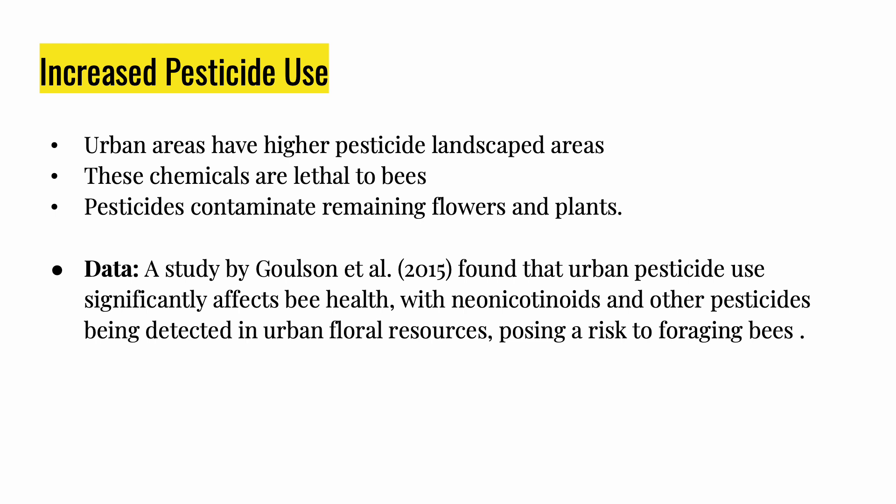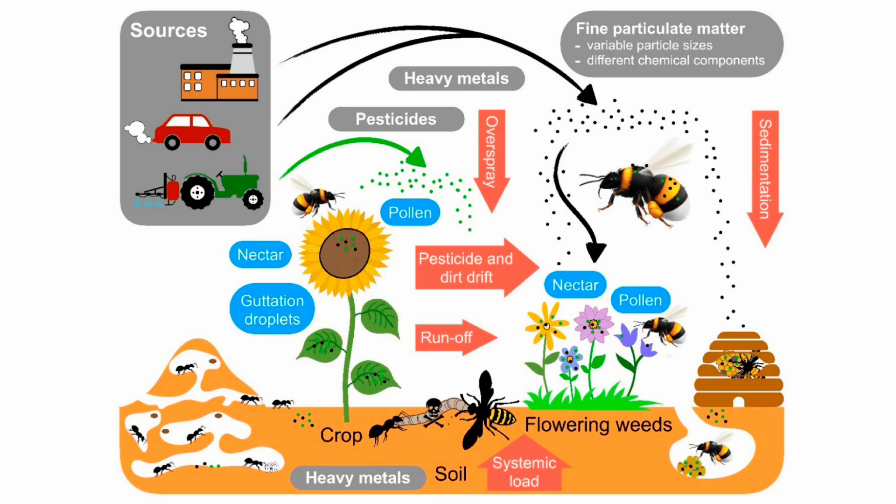Increased pesticide use. Urban areas often have higher pesticide usage in gardens, parks, and landscape areas. These chemicals can be harmful or even lethal to bees, further decreasing their populations. Pesticides can also contaminate the few remaining flowers and plants, reducing the quality and safety of available forage. A study by Goulson in 2015 found that urban pesticide use significantly affects bee health, with neonicotinoids and other pesticides being detected in urban floral resources, posing a risk to foraging bees.